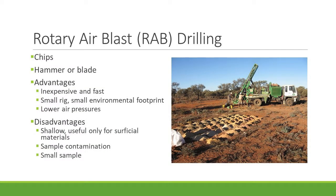Rotary air blast, or RAB drilling, is another chip method that is used for shallow geochemical testing. Samples are collected using a hammer or a blade from shallow, unconsolidated, superficial materials. RAB drilling does not penetrate fresh rock. It is an inexpensive and fast drilling method with a small environmental footprint due to the small size of the drill rig. Lower air pressures mean reduced safety hazards. The primary disadvantage of RAB drilling is sample contamination. Unlike RC, RAB drills use a single wall rod, so samples return to the surface in the annular space between the rods and the rock, resulting in contamination as the sample passes up the hole. The other disadvantage is that the sample is relatively small compared to the sample area.